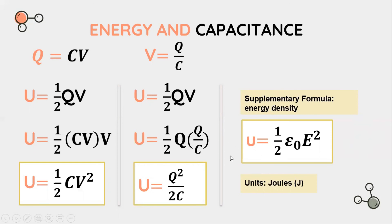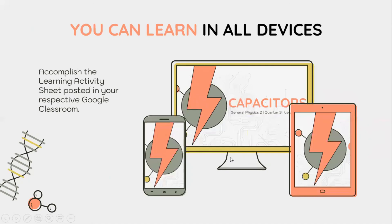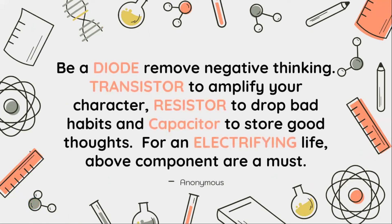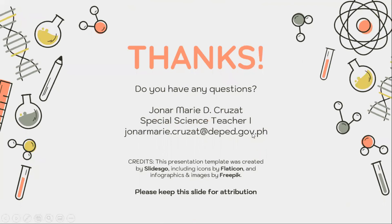That would be the end of this discussion. Kindly tune in to our classroom for your learning activity sheets. Before I end, I want to leave you with this quote: 'Be a diode — remove negative thinking. Be a transistor — amplify your character. Be a resistor — drop bad habits. And be a capacitor — store good thoughts. For an electrifying life.' All the above components combined make a great person. See you again, goodbye and thank you.